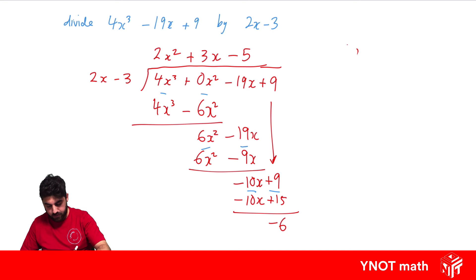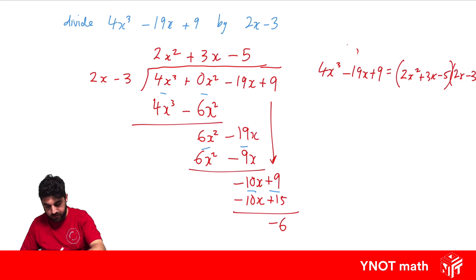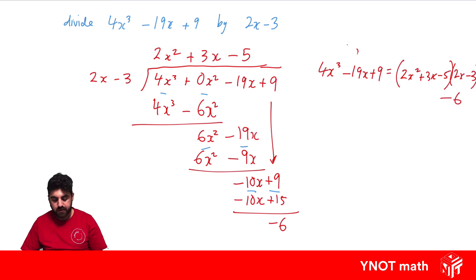When we get a remainder, we can write that our original polynomial 4x cubed minus 19x plus 9 equals our quotient 2x squared plus 3x minus 5, multiplied by our divisor 2x minus 3, plus our remainder, which in this case is minus 6.